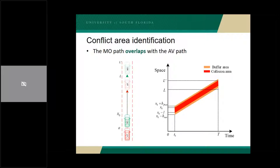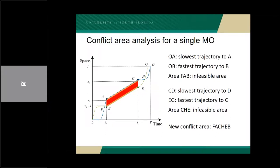The second type of conflict is that the MO path overlaps with the AVA path, as shown in the following scenario. Assume the length of the MO is small l, and the MO moves from location X0 to L' during time T0 to T with a constant speed. The conflict area caused by the MO in the time-space range is shown in the right figure. By considering the kinematics of the AVA, the conflict area can be extended. Here we use a parallelogram as an example. We define the slowest trajectory from one location to another in a given time period as a trajectory with the maximum travel time.